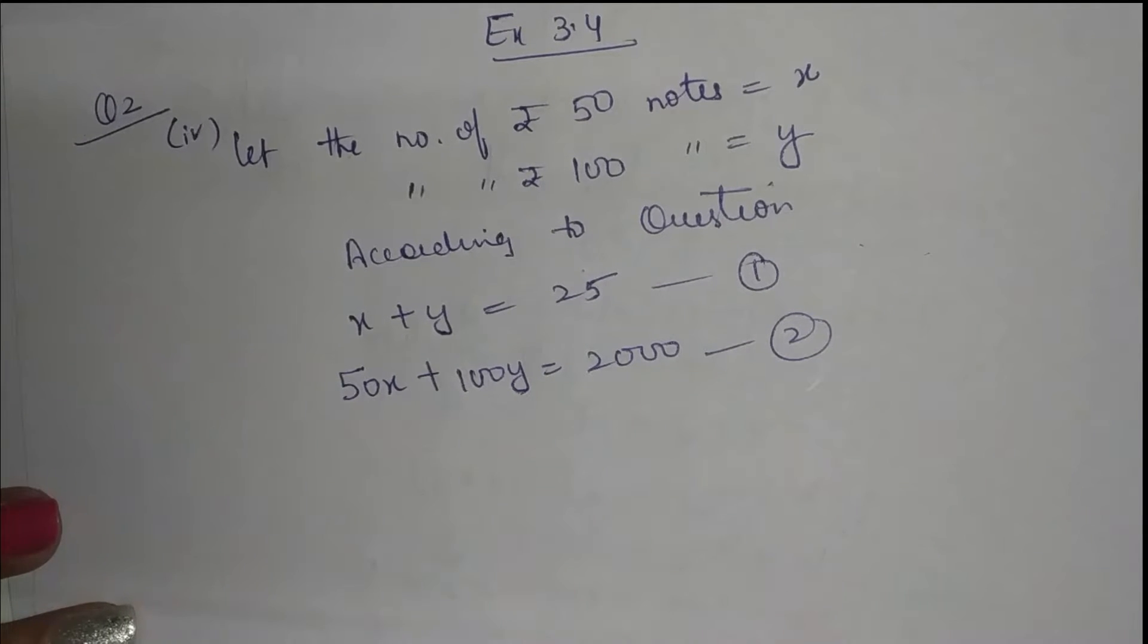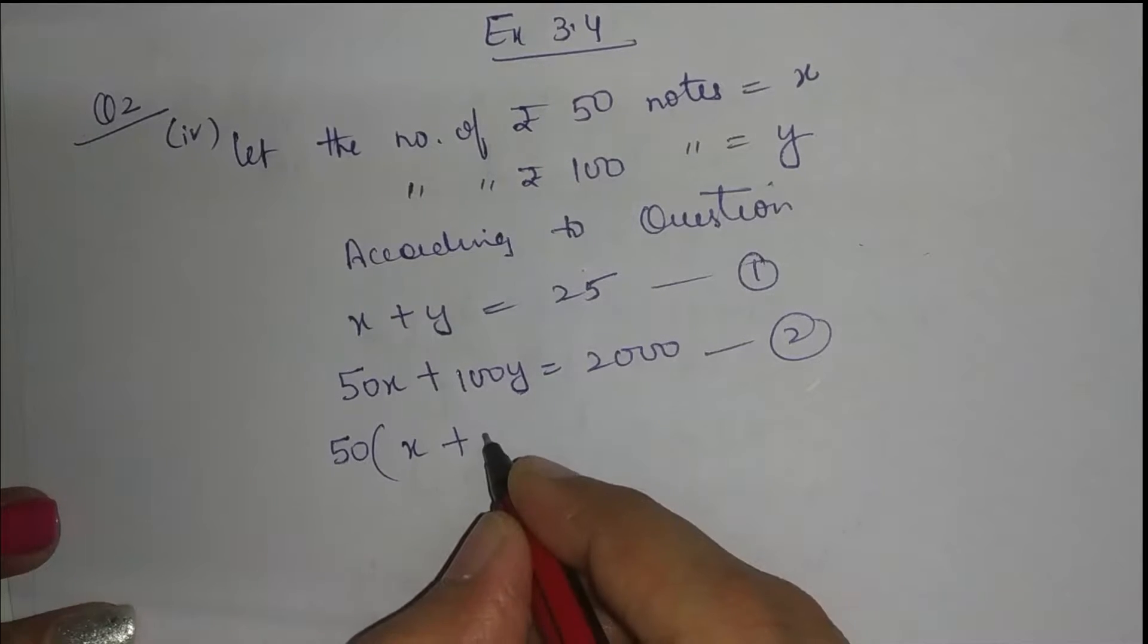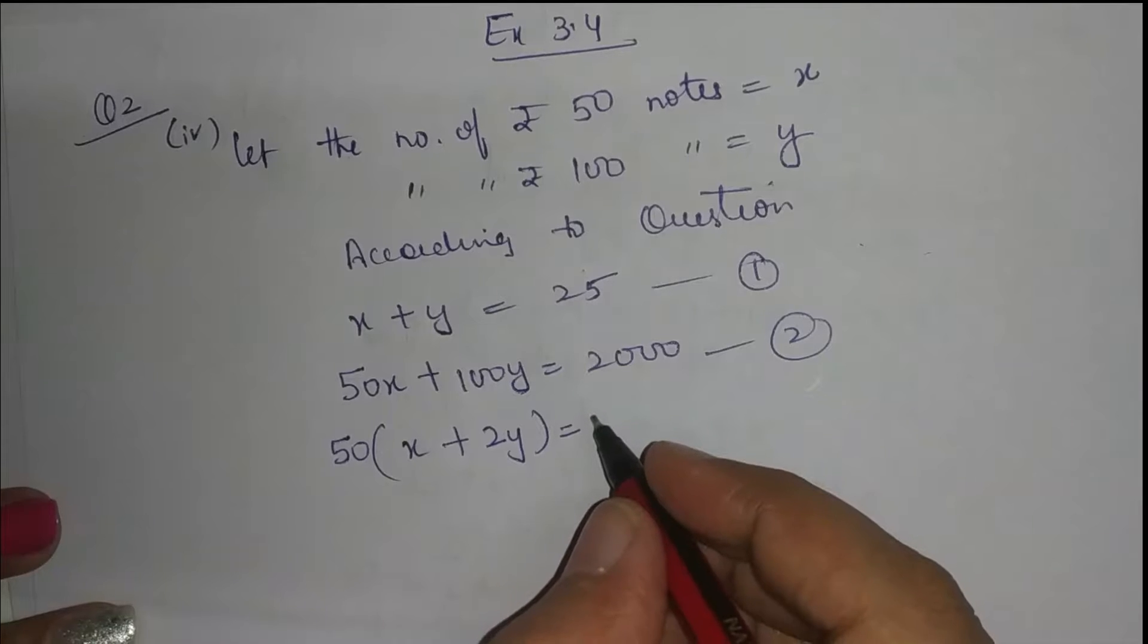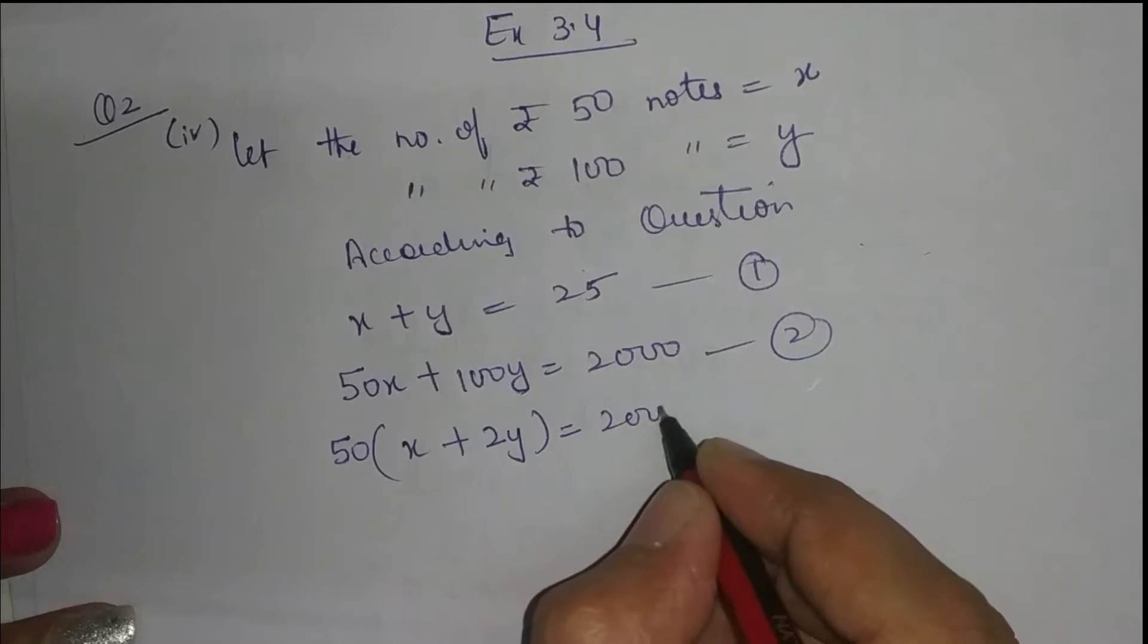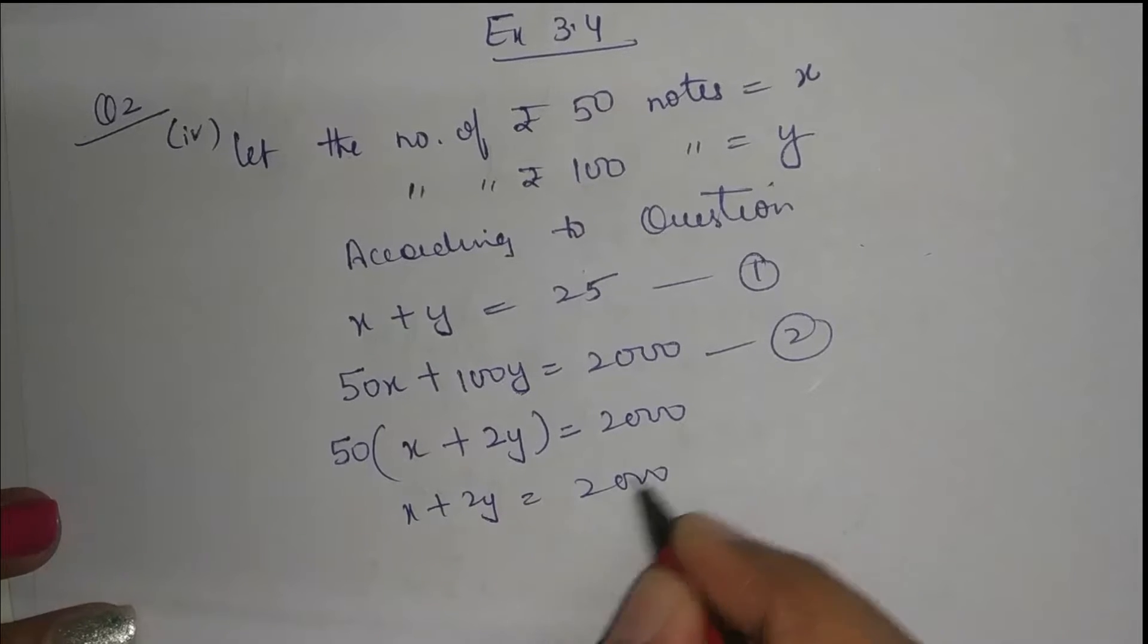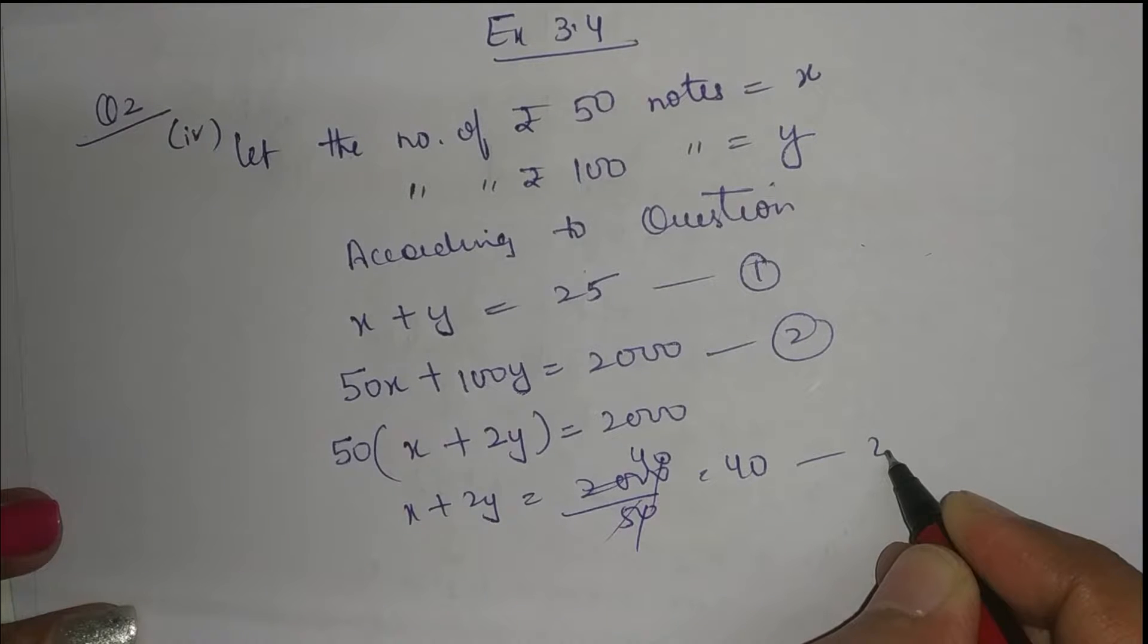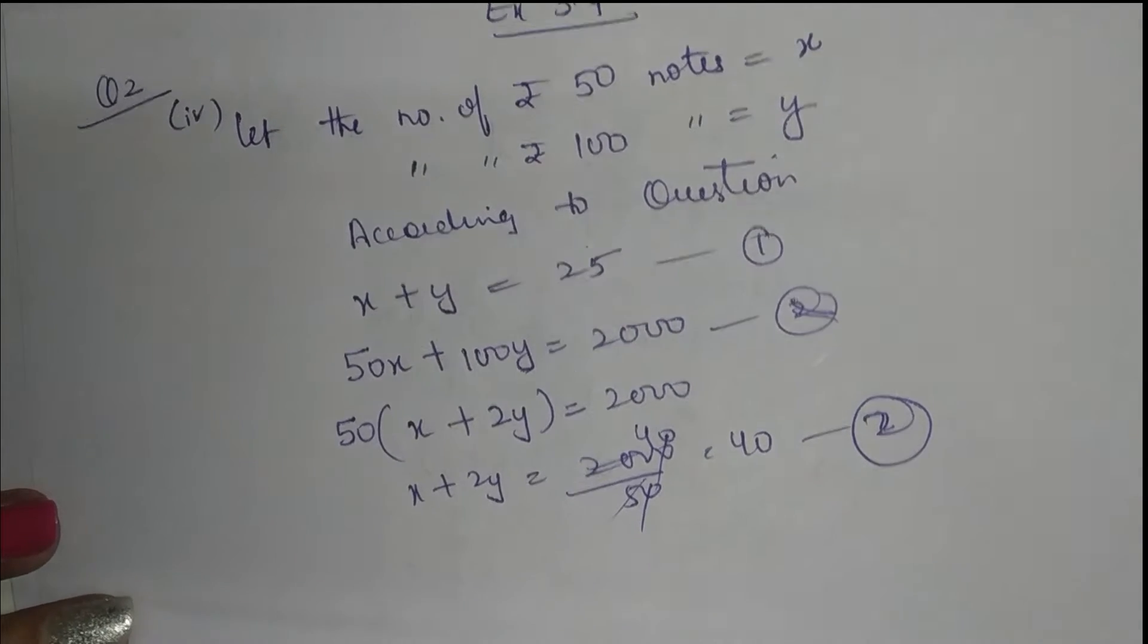Ab ye bahut bade equation hai. Is mein se hum kuch common nikaal lete hai. 50 common nikaal sakte, x plus 50, 2 is 100, 2y is equal to 2000. To x plus 2y, 50 idar jaake divide ho jayega. 5 fours are 40. To ye aagaya hai humare paas. Isko second equation suppose karte hai.